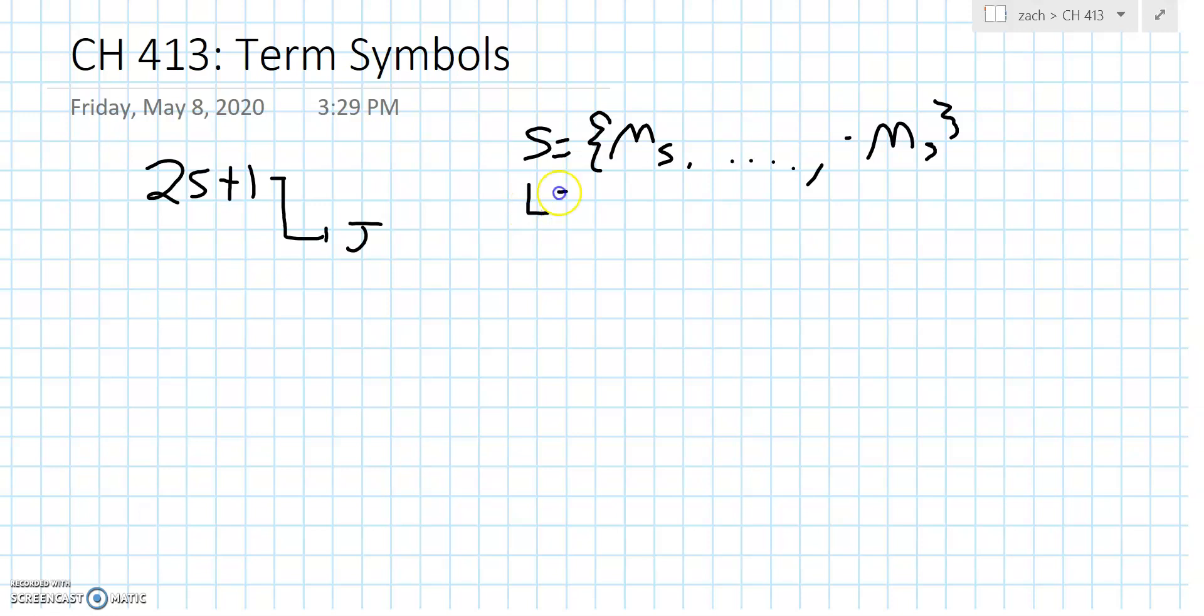This parameter L is equal to capital M sub L all the way down to M sub L minus. This fancy looking L is S when L is 0, P when L is 1, D when L is 2, and finally F when L is 3 and continues.